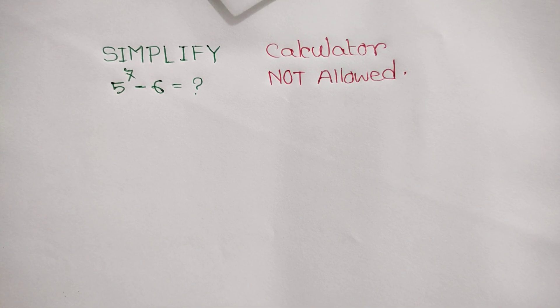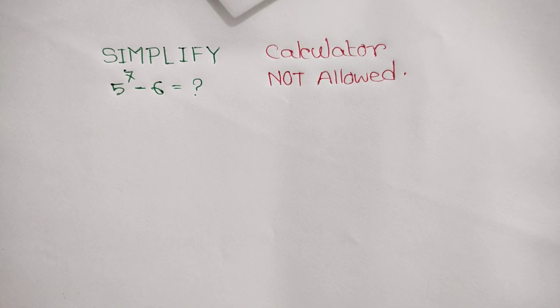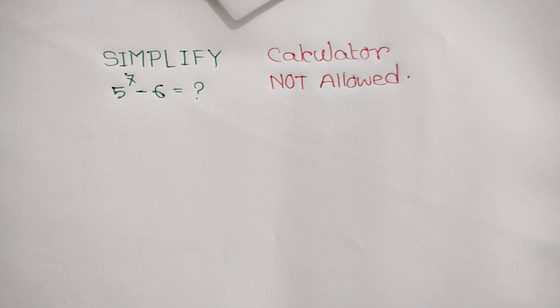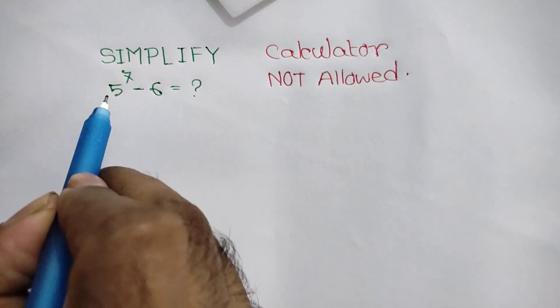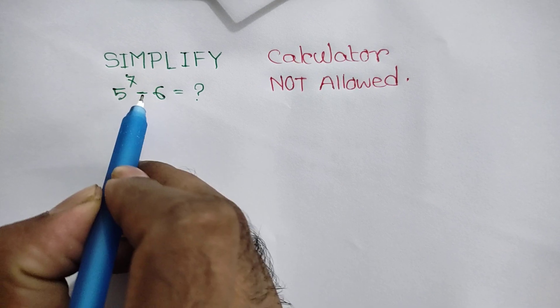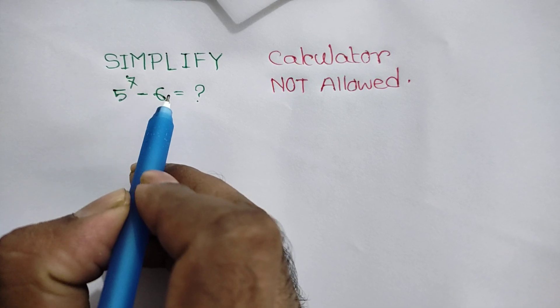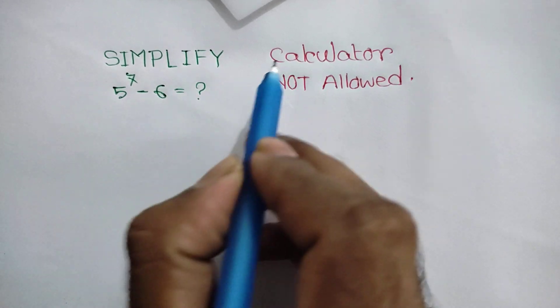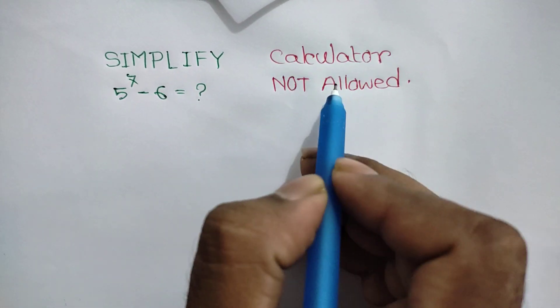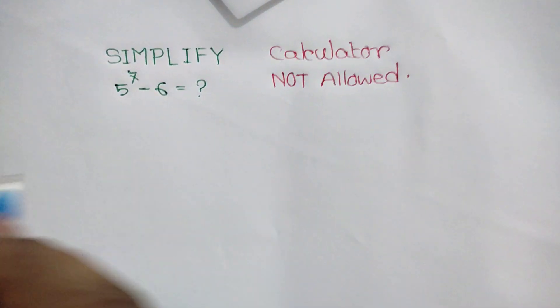Hi everyone. In this video I am going to show how to simplify this math problem: 5 to the power 7 minus 6 is equal to what? Calculator not allowed.